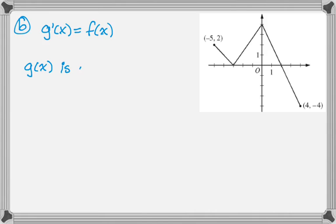And if g of x is increasing, that means that g prime, which is f of x, must be positive. So what I'll do is, on the graph, I'm going to highlight all the places that it's positive. So there, there, and there.